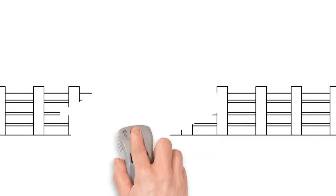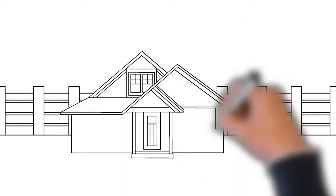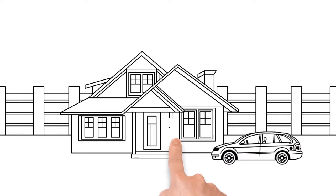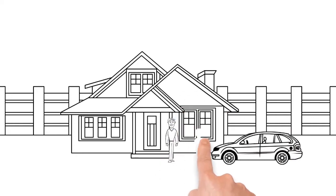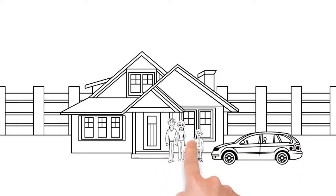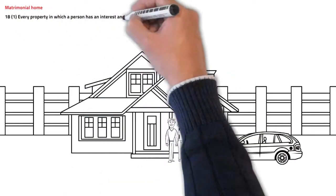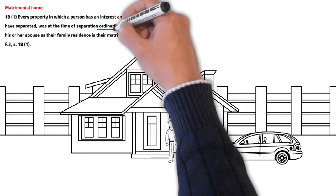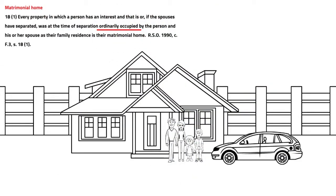In our last video, we talked about the right of possession of Ontario matrimonial homes. As a quick reminder, a matrimonial home is generally the house in which a married couple ordinarily lived at the time of separation.